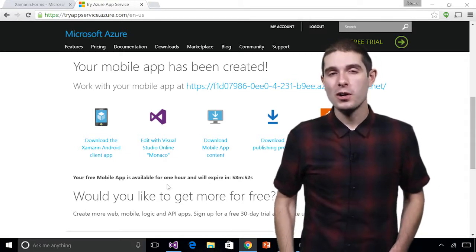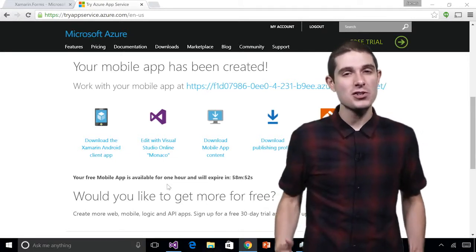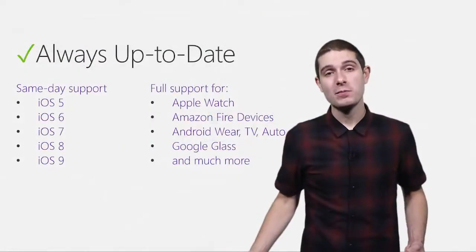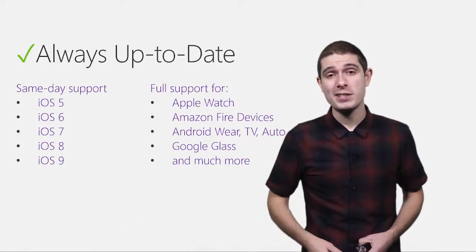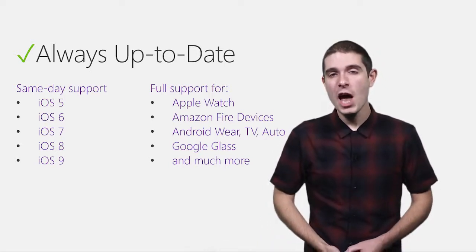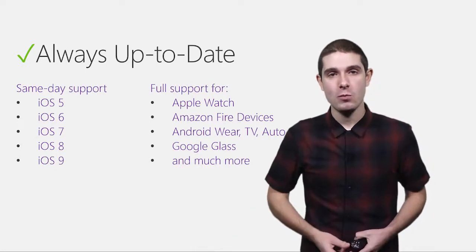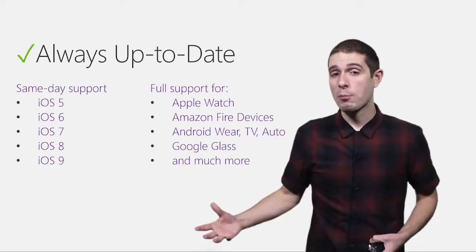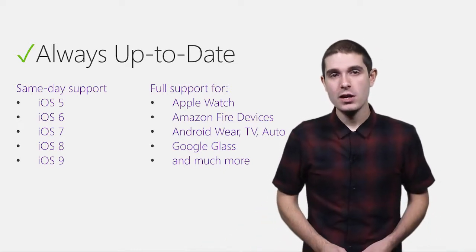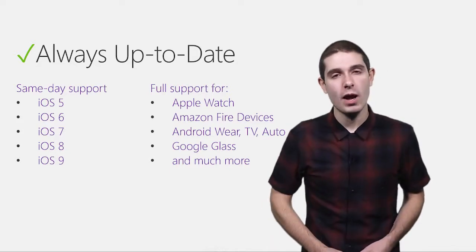We just saw a great whirlwind tour of the Xamarin platform, crafting iOS, Android, and Windows apps in C# and .NET, and taking it to the cloud with Azure. With Xamarin you're always up to date — we've been shipping great same-day support for iOS since iOS 5, including the latest iOS 9 and 9.1. We have great support for new emerging devices, because it's not just about phones and tablets: Apple Watch, Amazon Fire devices, Android Wear, TV Auto, and even Google Glass. You can take your C# and .NET code and run it on over 2.6 billion devices around the world.